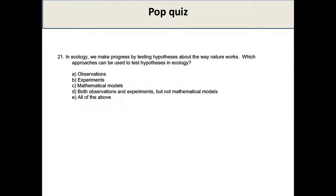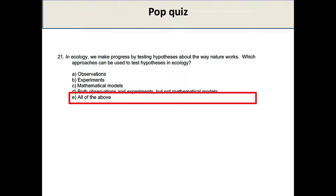Next up: in ecology we make progress by testing hypotheses about the way nature works. Which approaches can be used to test hypotheses in ecology? We talked a lot about the scientific method — we set hypotheses, make predictions, test our predictions, and go back to the beginning again. We can use observations, experiments, or models to test predictions that we make.